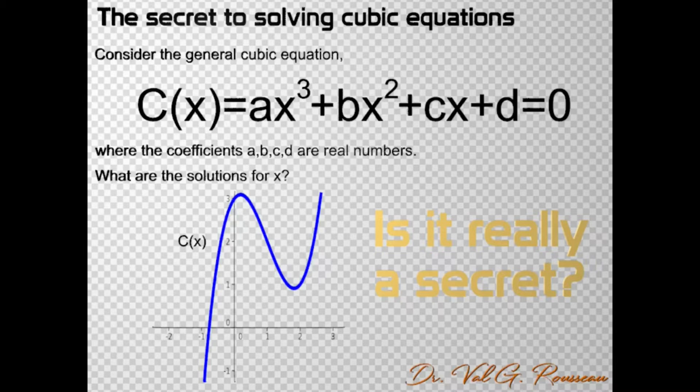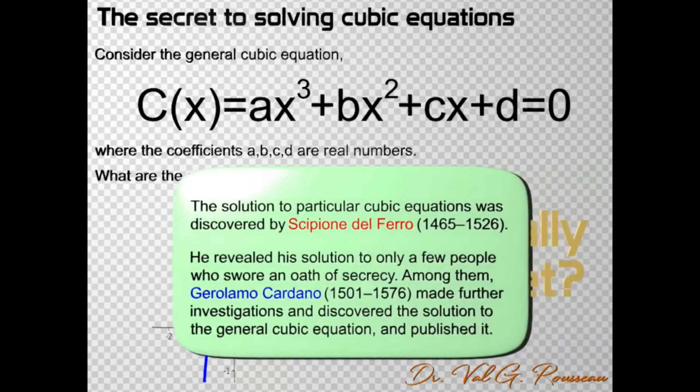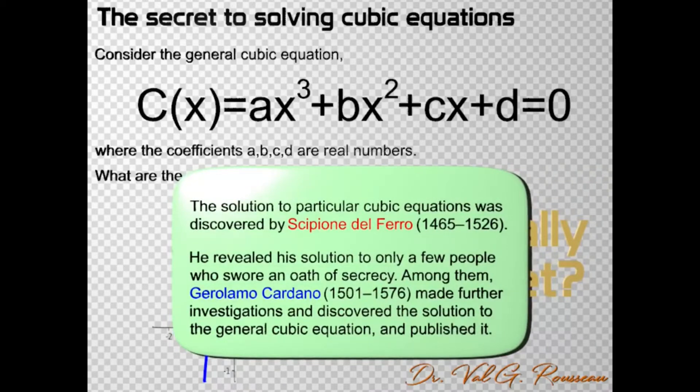It might sound a little bit exaggerated, but actually the solution to cubic equations was a secret that was well kept in the 1400 and 1500. The solution to some particular cubic equations was first discovered by Scipioni del Ferro. He wanted to keep his solution secret because in those times one had to win public challenges in order to get and keep an academic job by demonstrating an ability to solve problems that others could not.